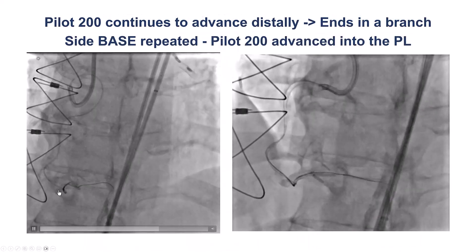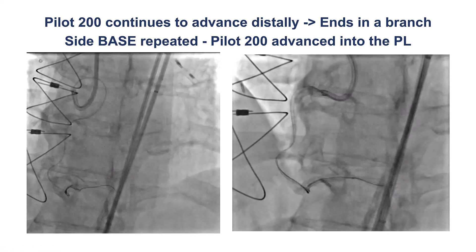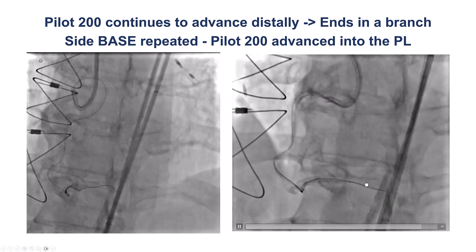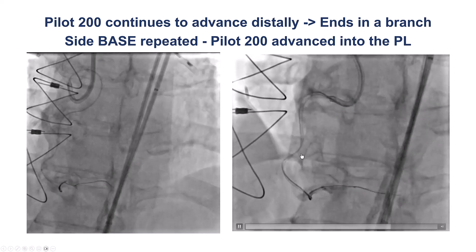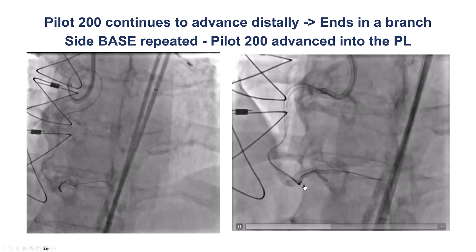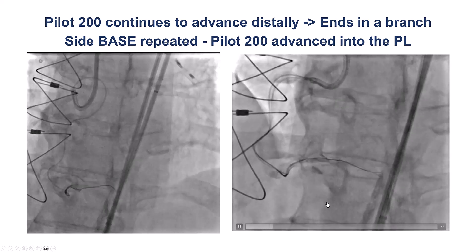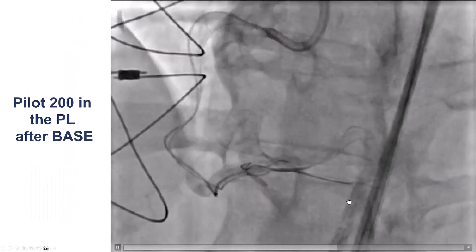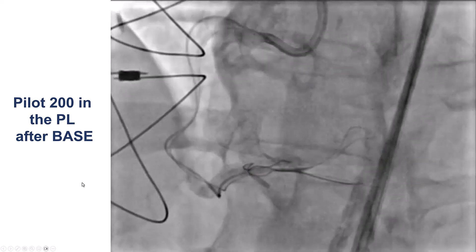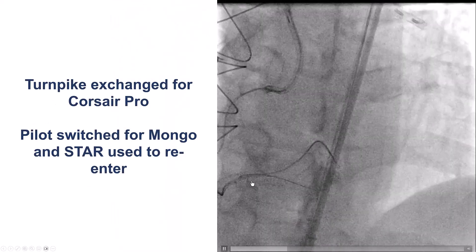We continued to dissect distally, but then got into a similar problem — the wire kept entering into a side branch. To avoid this, we did side-BASE again: we advanced a balloon and then used a Pilot 200 guide wire to track again into the right posterolateral, which eventually was successful.